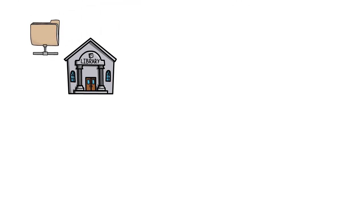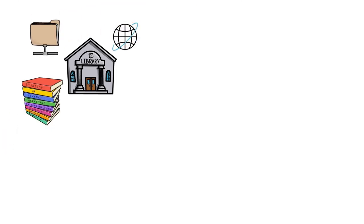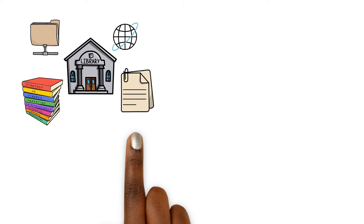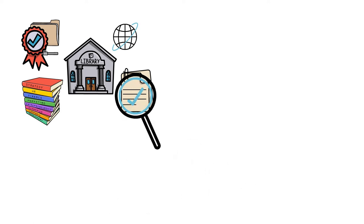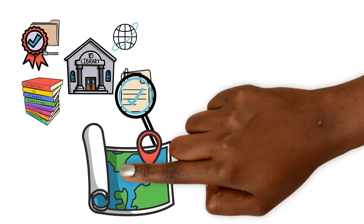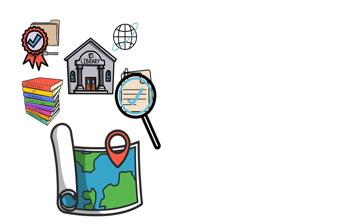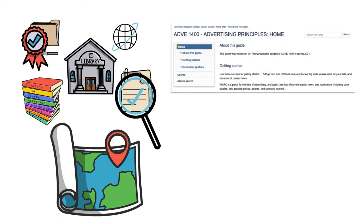Use research guides to get acquainted with library resources — databases, websites, books, and articles — view top sources within your subject area, uncover resources at your library, discover pathways to often used databases, and find resources for specific courses, identifiable by course number.